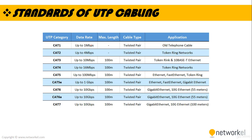UTP categories range from Cat1 to Cat7, with various data rates for each category. For example, Cat1 supports up to 1 megabit per second, while Cat7 supports up to 10 gigabit per second. Maximum cable length is almost the same across categories at around 100 meters. Applications vary: Cat1 is used in telephone cables, Cat2 in token ring networks, and Cat6 in gigabit and 10 gigabit Ethernet networks.